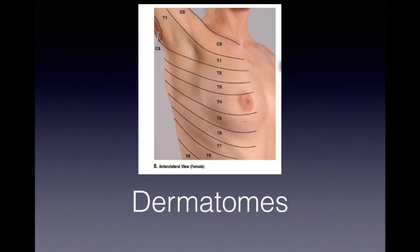These are the dermatomes of the chest wall. C5 also supplies the uppermost parts of the chest wall, so you need to block the supraclavicular nerve to cover this area. For that, you just need local infiltration over the clavicle.